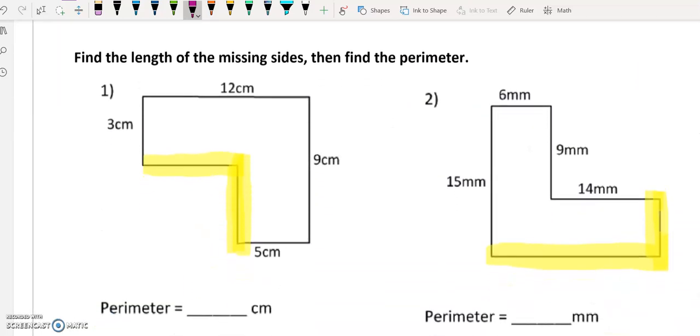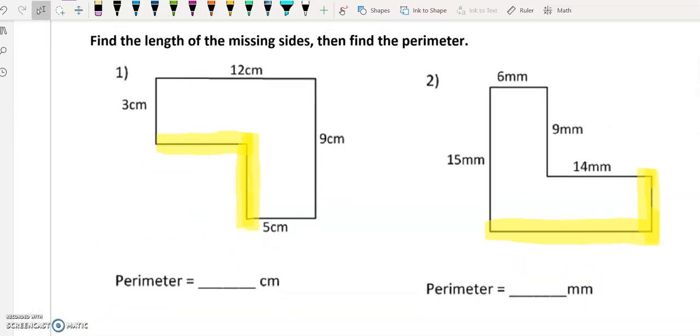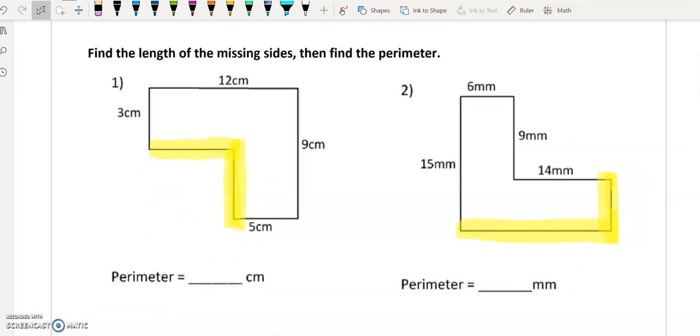Moving on to the next side, we get a couple more tricky perimeter problems. So these are not the straightforward shapes we see on the previous page.